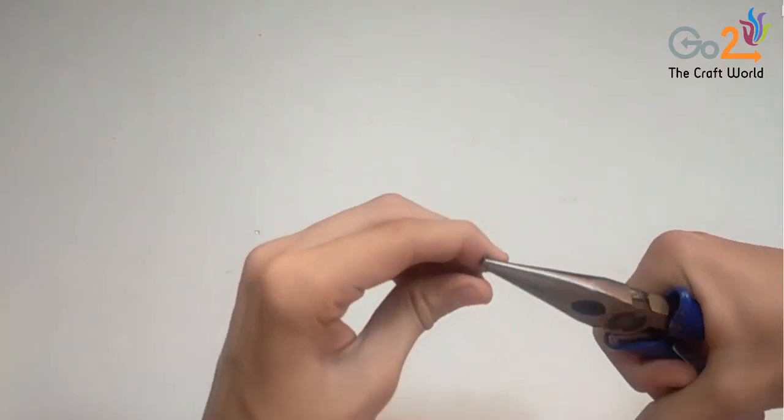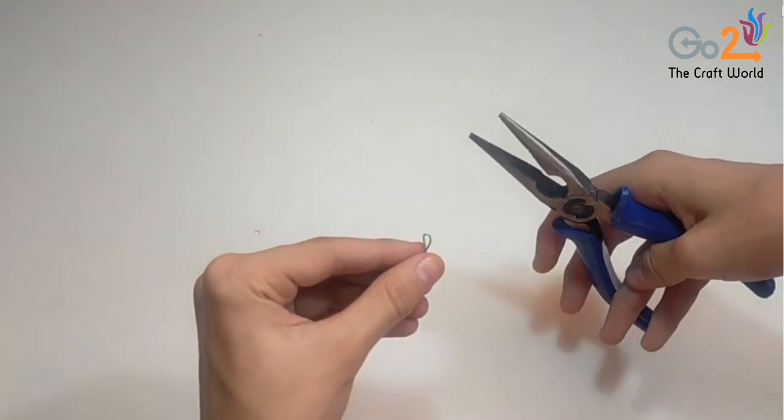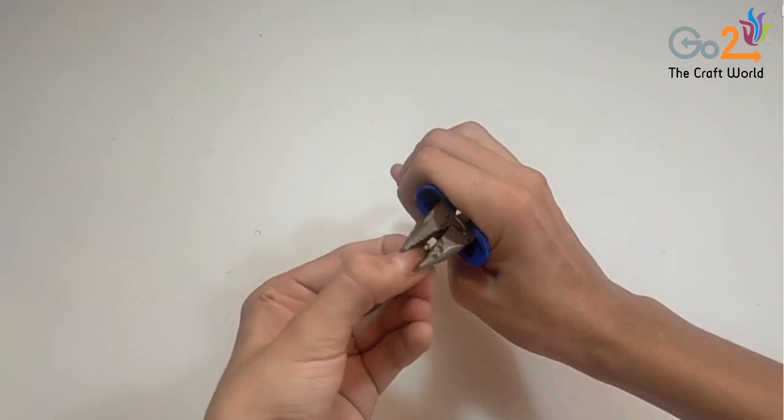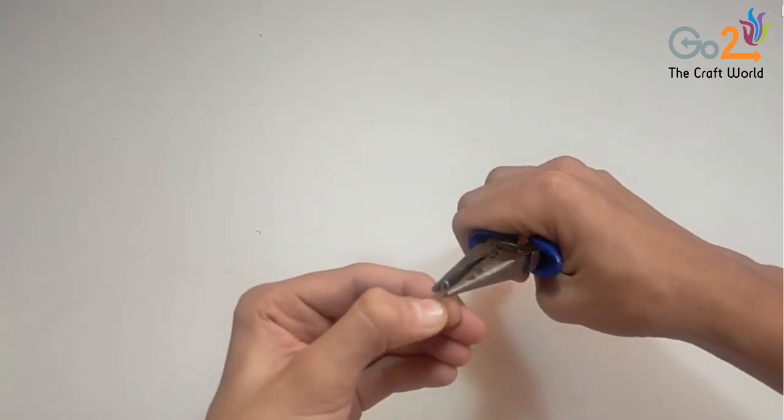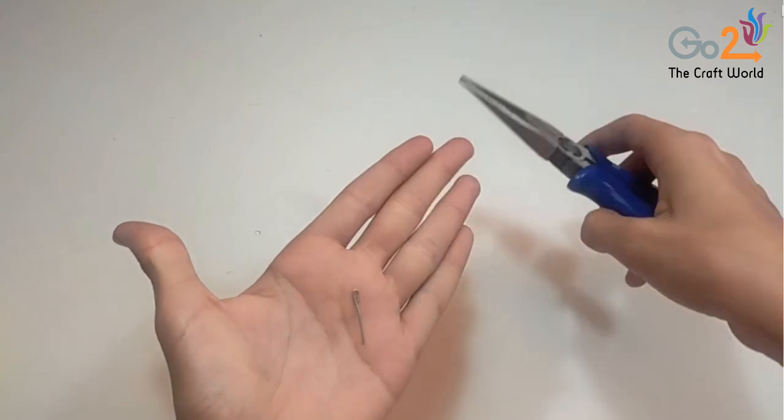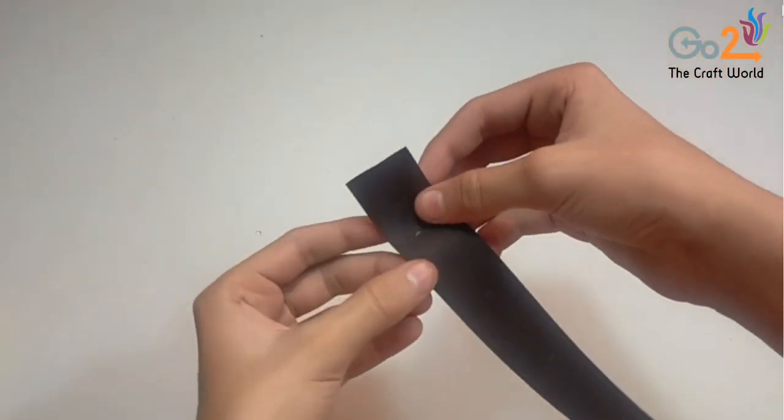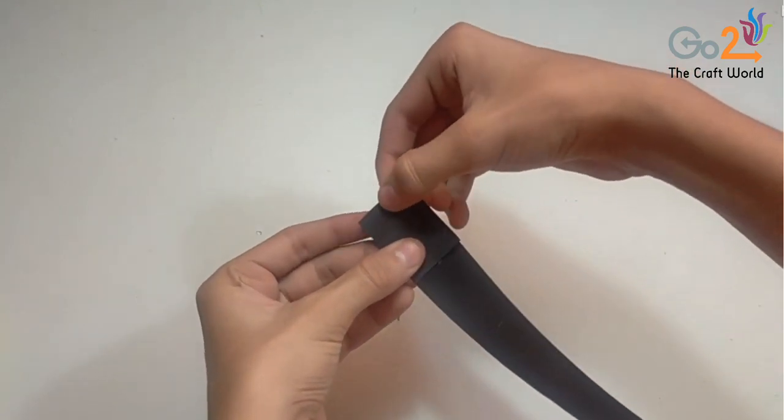So now we will take a flexible wire and with the help of pliers we will make a loop like this. Now we will fold the strips by the marking which we have done earlier.